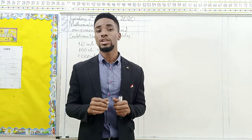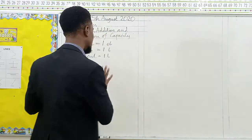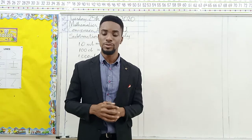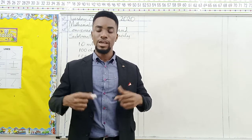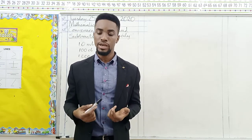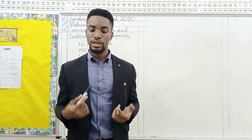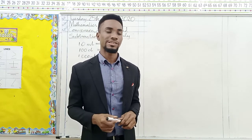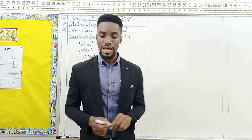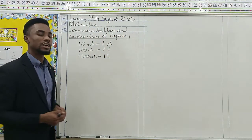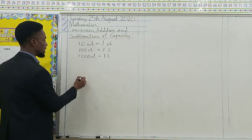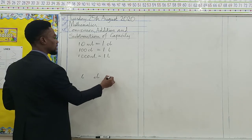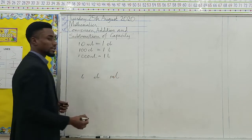Just in case you forget this, there is something else that is going to help you remember it — the converting metric capacities or conversion key. Let's see how it looks like. It has the liter, the centiliter, and the milliliter this way: liter, centiliter, and milliliter.